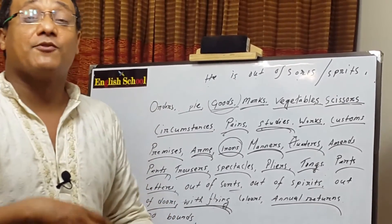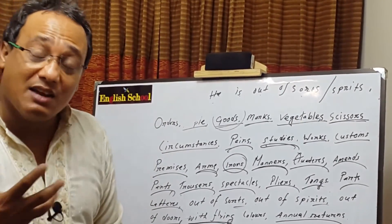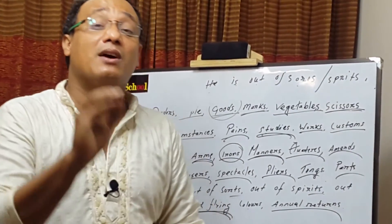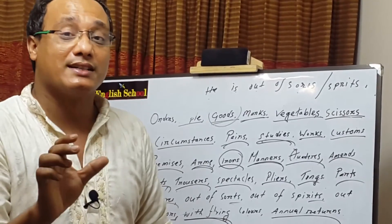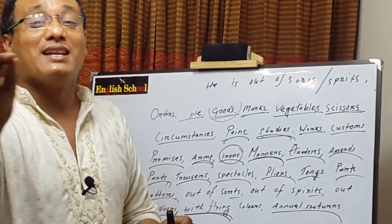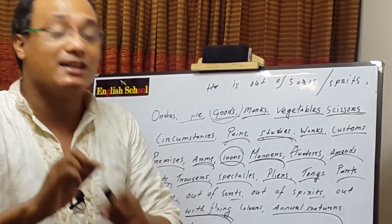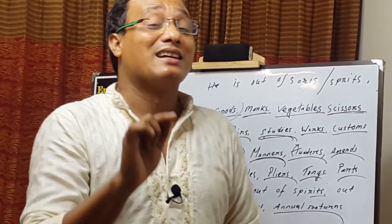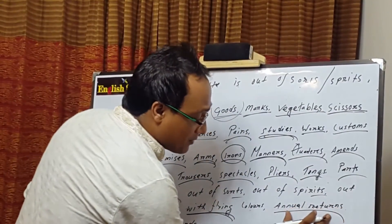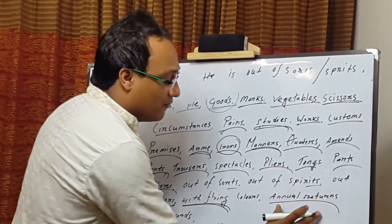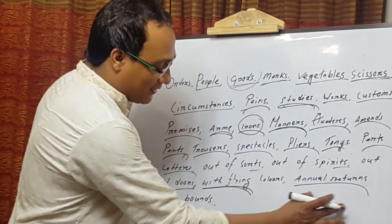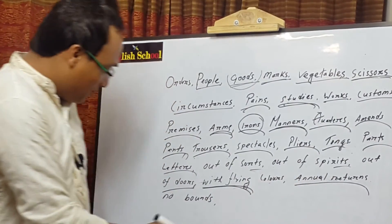Next is 'returns.' When returns come from any company or organization, we must use 'annual returns,' not 'annual return.' For example: 'I have gone through the annual returns' — not 'annual return.' It must be plural: 'annual returns.'